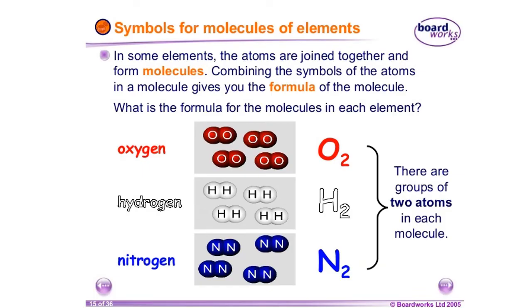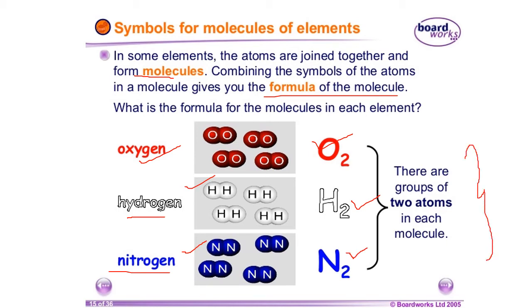Symbols of the molecules of elements: in some elements, atoms are joined together to form molecules. Combining the symbols of the atoms in a molecule gives you the formula of a molecule. For example, oxygen is O2, hydrogen is H2, and nitrogen — two N atoms combine to form N2. These are groups of two atoms in each molecule and are considered diatomic molecules.